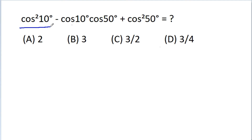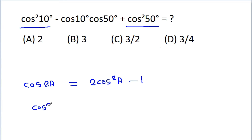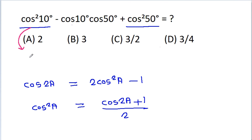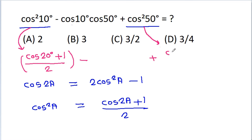We have cos²10° and cos²50°. Using the identity cos2a = 2cos²a - 1, so cos²a = (cos2a + 1)/2. Therefore cos²10° = (cos20° + 1)/2, and cos²50° = (cos100° + 1)/2.